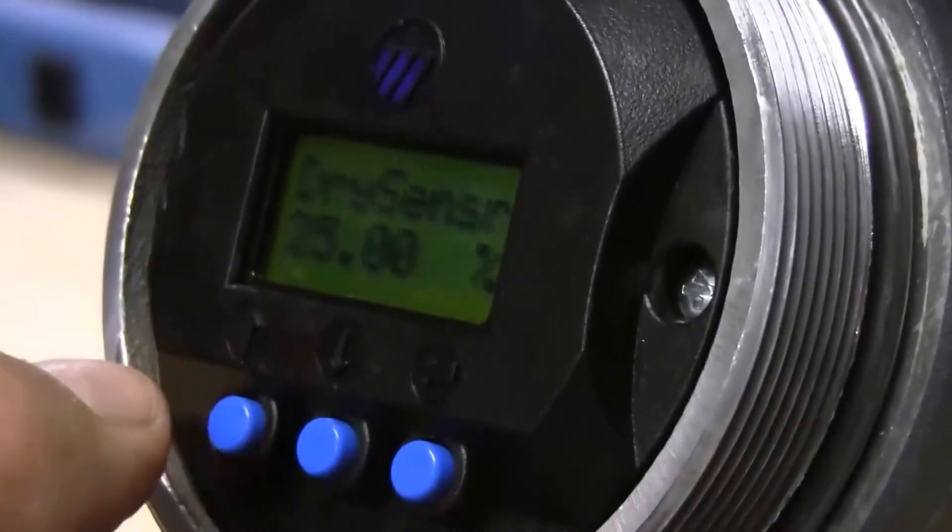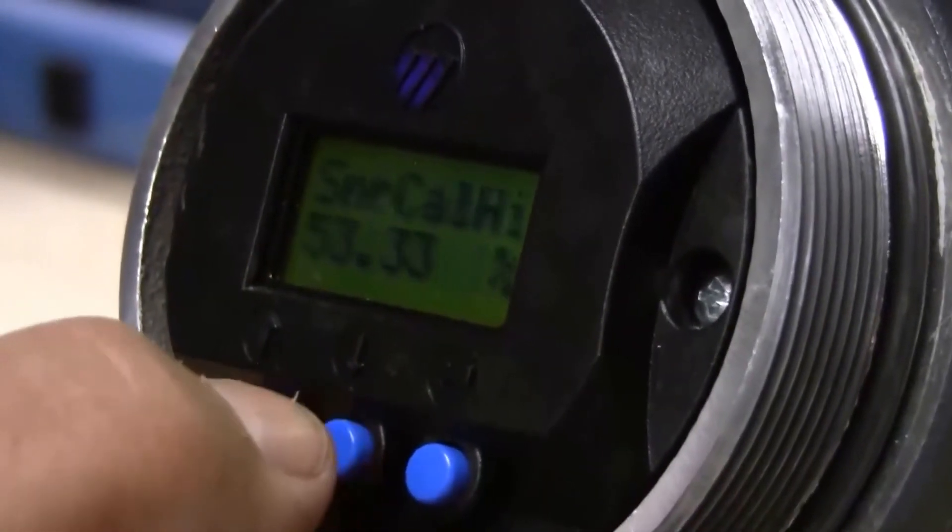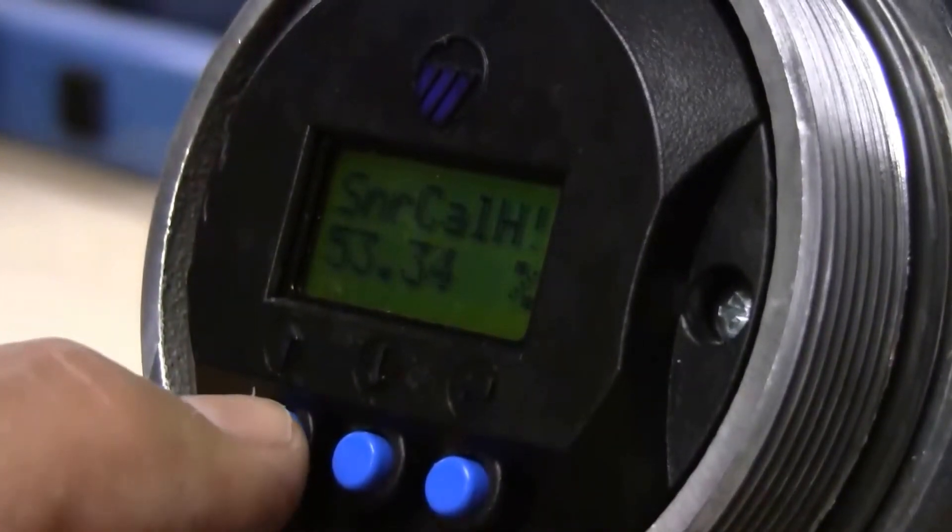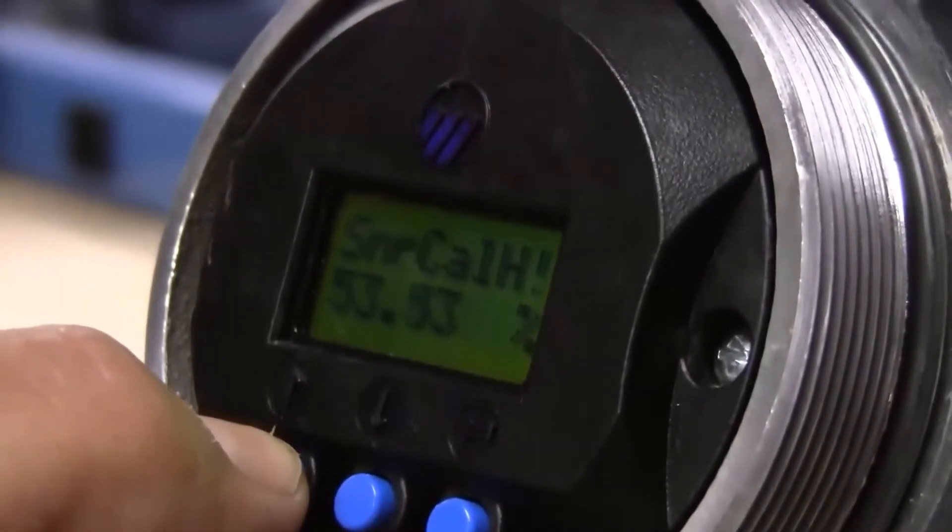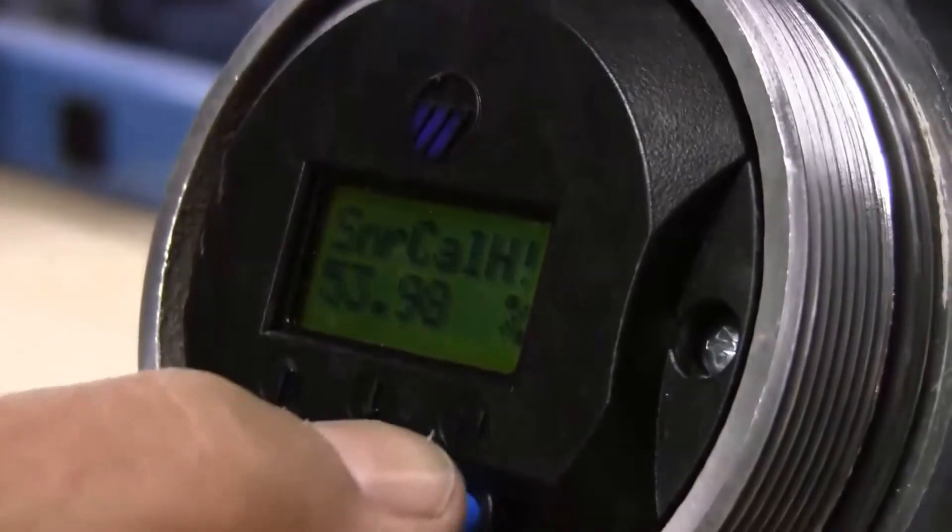So sensor cal high, go back to our LVDT and that's 53.98. So we're going to enter that into the sensor cal high. Enter and up arrow to 98, 53.98. Enter that.